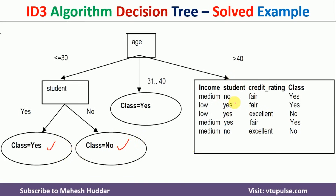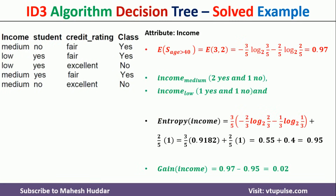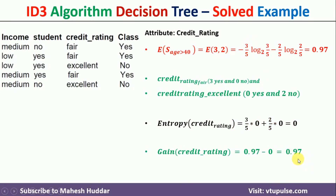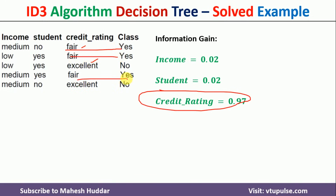Now for the right side — the subset for age greater than 40 — we calculate the information gain for income, student, and credit rating. Income gives 0.02, student gives 0.02, and credit rating gives 0.97. Credit rating has the highest information gain, so it becomes the root node for this subtree. It has two branches: fair and excellent. For the fair branch, all examples are yes, and for the excellent branch, all examples are no.